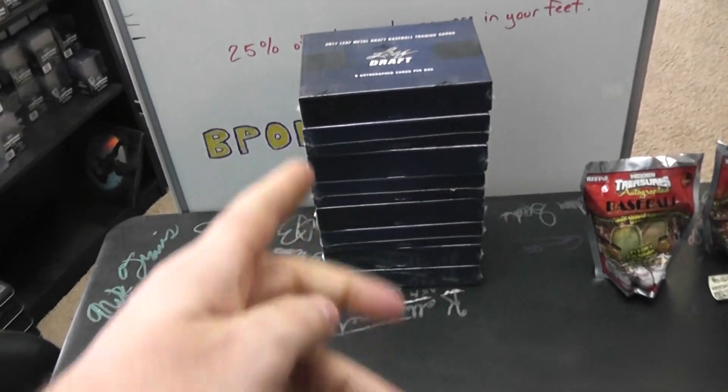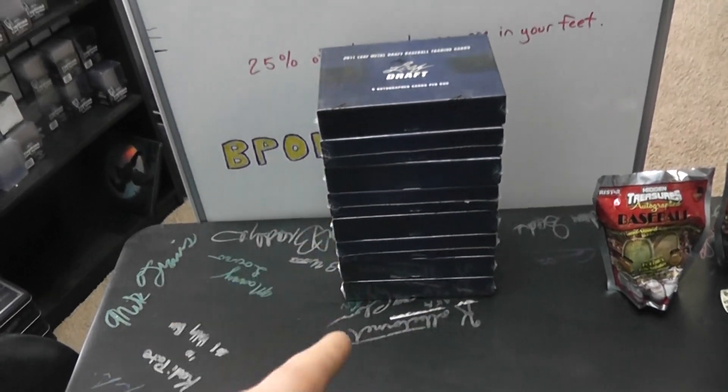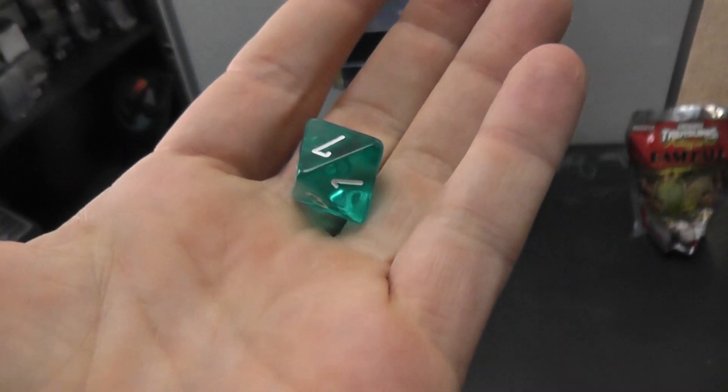Robert, we have those eight boxes of Leaf Metal 2011. You're going to try one. They're not numbered, so we'll roll the die and then number the rest. Here we go. You got box two.